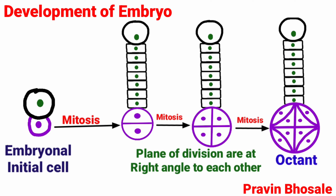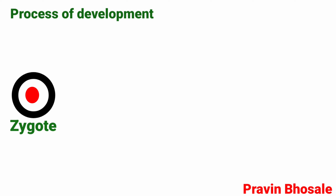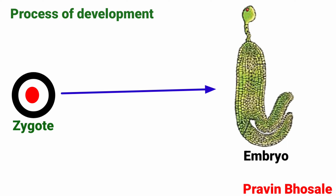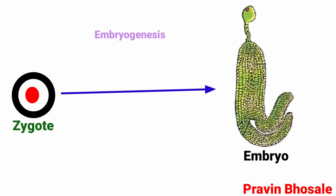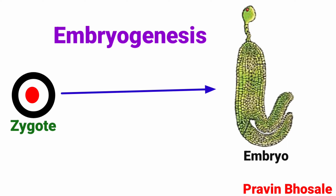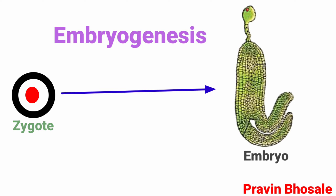Development of embryo is a process of development of zygote into an embryo. This process is called embryogenesis. So in embryogenesis, zygote forms embryo.